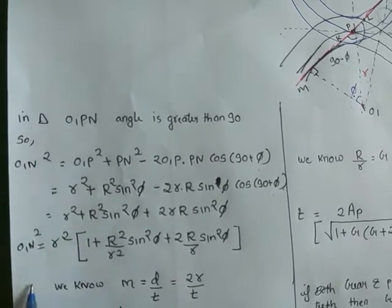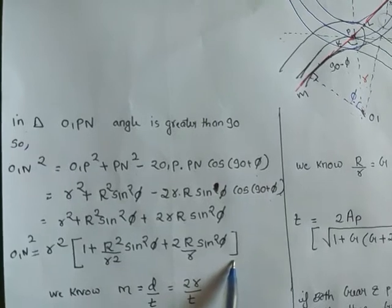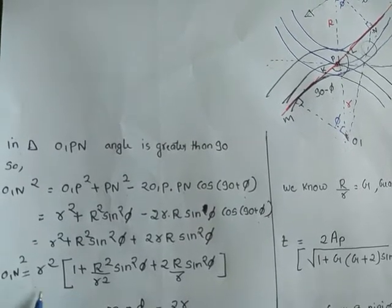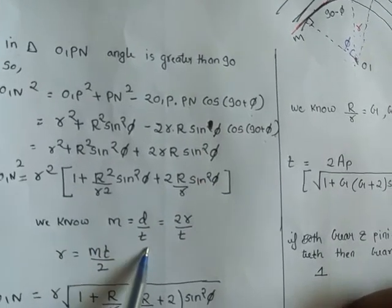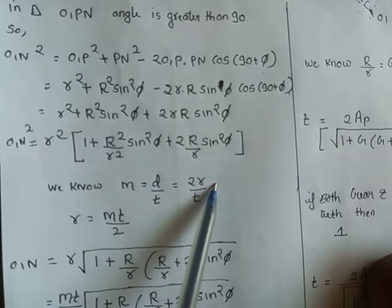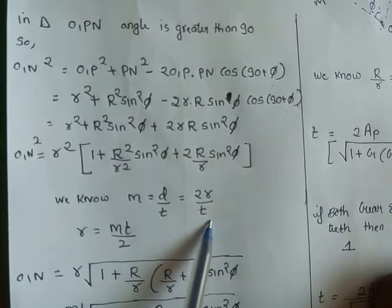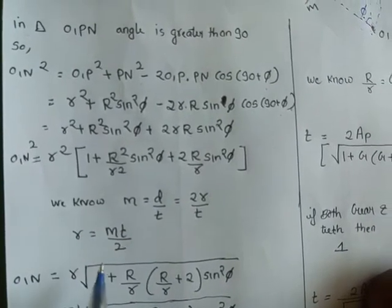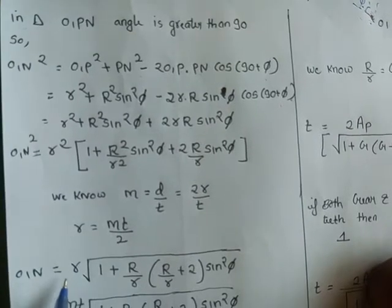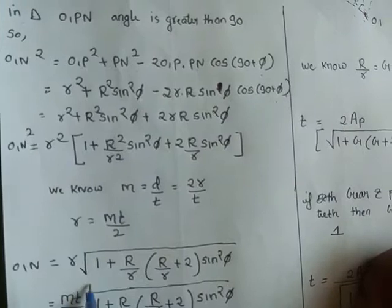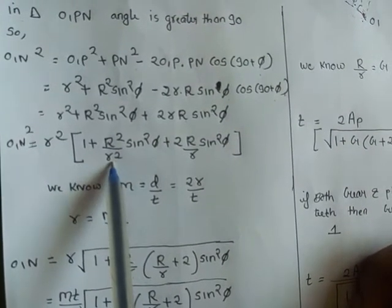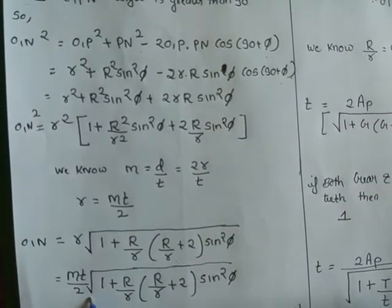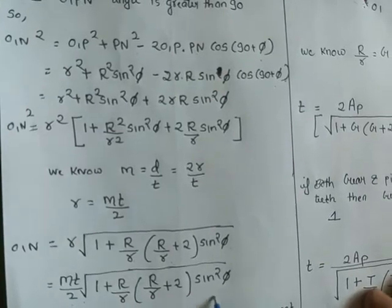Small r is for the pinion, capital R is for the wheel. Taking r square common, you get this equation. We know that module is diameter upon number of teeth, which gives r equals m times t by 2. Substituting r value, we get O1N equals mt by 2 times the square root of 1 plus R over r times R over r plus 2 sin square phi.